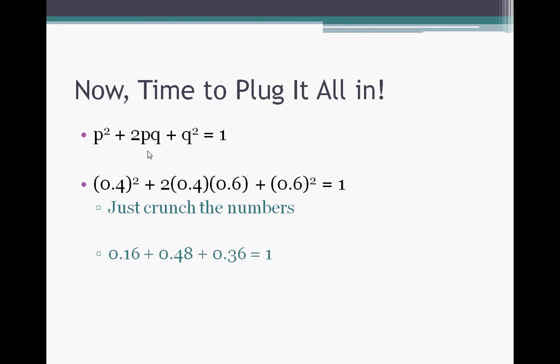So 0.4² is 0.16, 2 times 0.4 times 0.6 is 0.48, and 0.6² from earlier we knew was going to be 0.36, and if you do your math, it all equals 1. We are almost done.